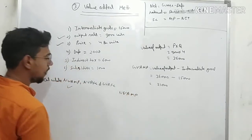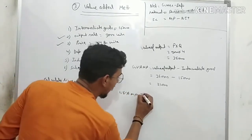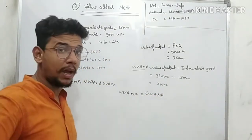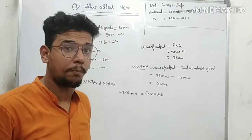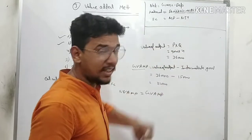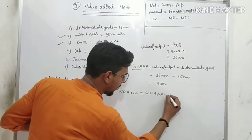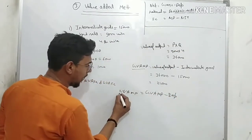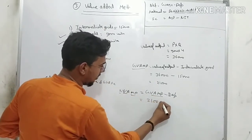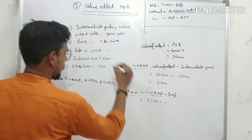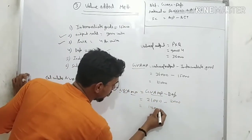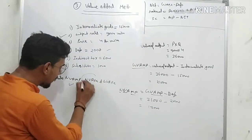Next, find NVAMP. You've already found GVAMP = 21,000. Gross minus Depreciation = Net. Depreciation given is 2,000. So NVAMP = 21,000 − 2,000 = 19,000.